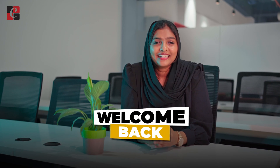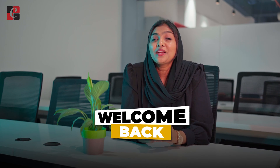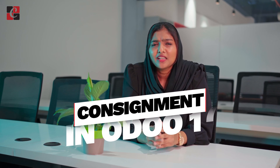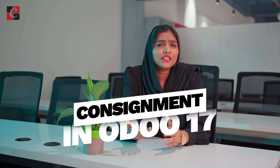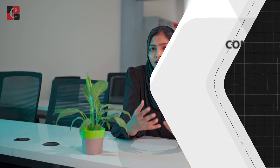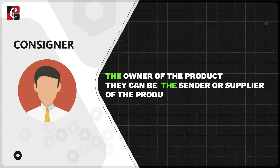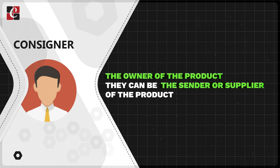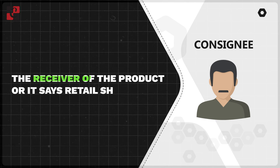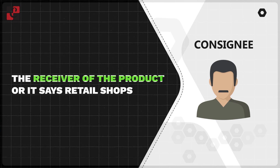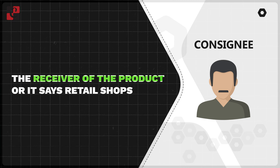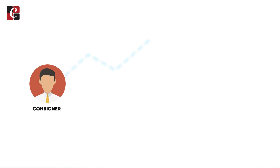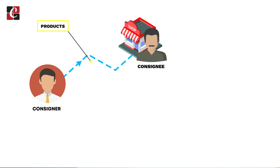Welcome back. In this video we're going to discuss consignment. Before moving on to the topic, we need to know the terms consigner and consignee. The consigner is the owner of the product, or they can be the seller or supplier of the product. The consignee is the receiver of the product — we can say they are the retail shop.